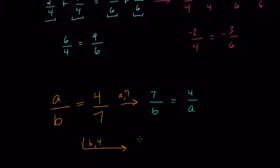Down here, I get A over 4 equals what? Well, we're swapping B and 4, so B over 7. And there you can see the reciprocals. And now the subtraction property.